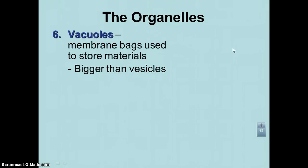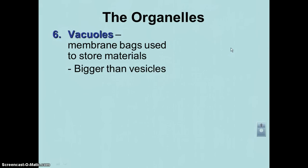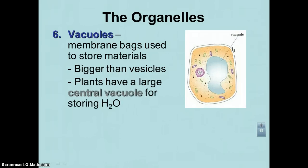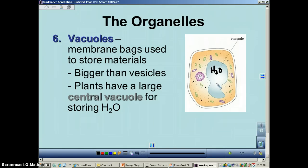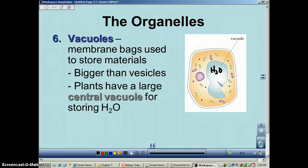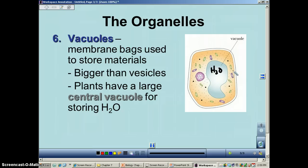Our next organelle is vacuoles, which we just talked about when discussing lysosomes. A vacuole is essentially a vesicle — it's just bigger. Plant cells have a rather large central vacuole. Inside this vacuole you're going to find water — it's basically a big giant water balloon — along with some carbohydrates and other things dissolved in it. When the central vacuole is full, it pushes the cytoplasm out to the edge of the cell, helping the plant stand up straight. We call that turgor pressure, and when the plant has a full central vacuole, it's said to be turgid.